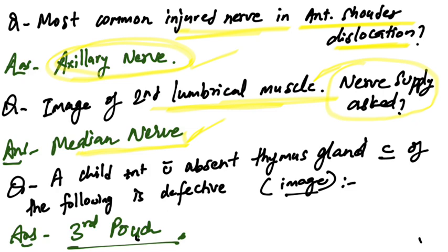A child presenting with absent thymus gland, which structure is defective? The answer is the third pouch. If the thymus is absent, it is a defect of the third pouch.